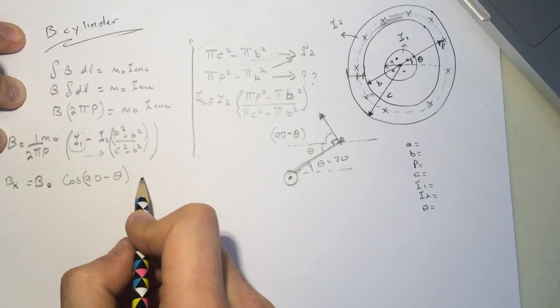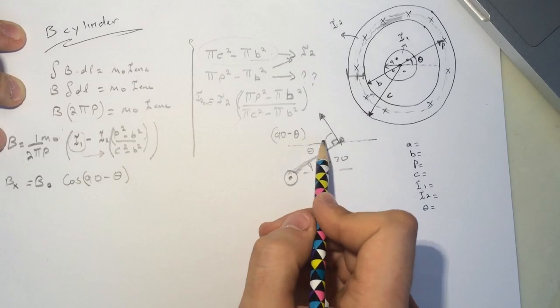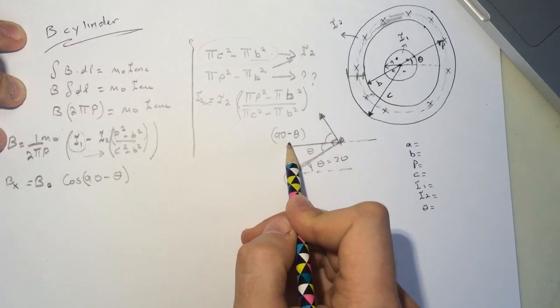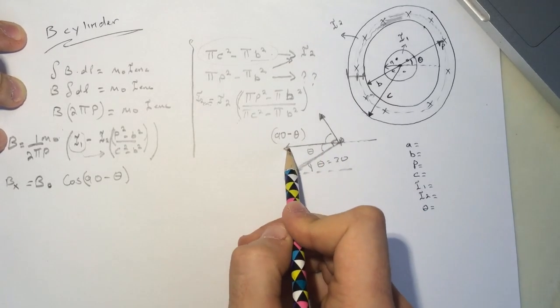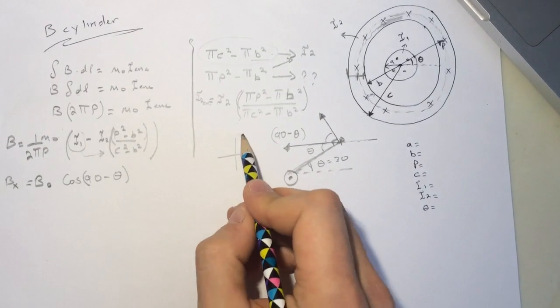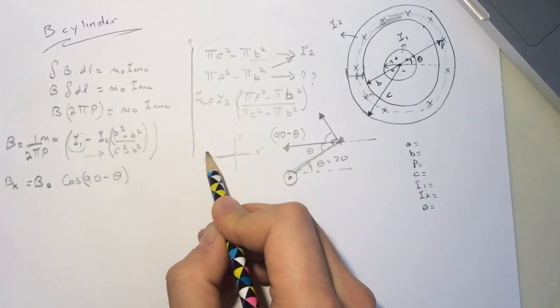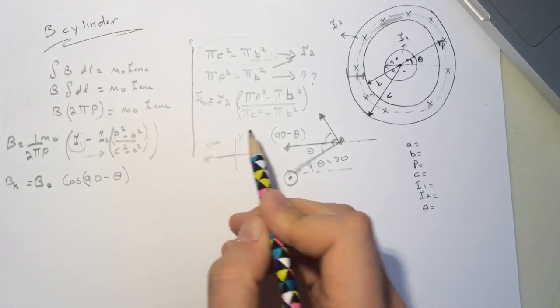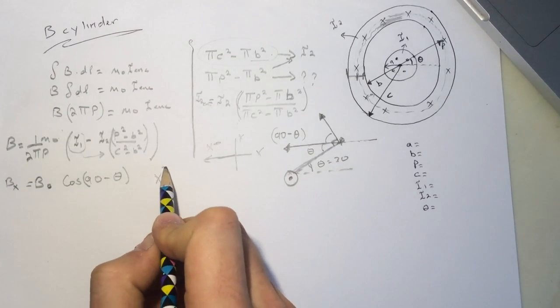Okay, and if you look at the direction of it, the direction is in the, this way here. It's going this in the, if we say that this is y, this is x, it's going in the x direction, x minus direction.